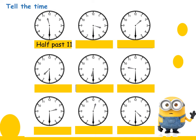Now we want to tell the time. It's half past 11 — the first one is half past 11 because the long hand is on 6 and the short hand is on 11, almost 11, between 11 and 12. The next one: the short hand is on almost 3 and the long hand is on 6, so it's half past 3.